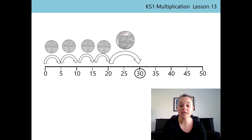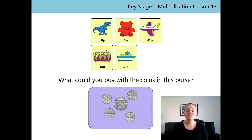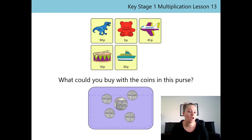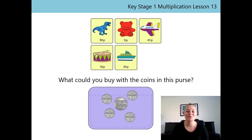So this has been shown using the number line. Let's go back to the original question — what could you buy with the coins in this purse? Now we know we've got 30P in our purse. Could we buy the dinosaur? No, that's right — we can't buy the dinosaur because the dinosaur costs 90P and we only have 30P. What about the teddy bear? Do we have enough money to buy the teddy bear? That's right — we do have enough money because the teddy bear costs 9P and we have 30P in our purse.